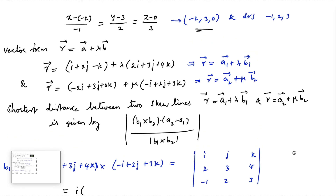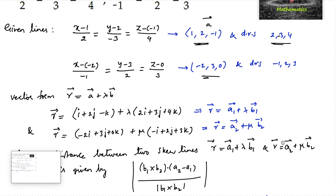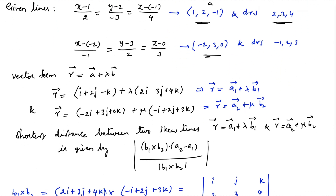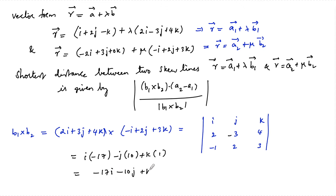Note: the direction ratio of the first line is (2, −3, 4) — the sign of the j-component is negative due to rewriting (2−y)/3 as (y−2)/(−3). The cross product gives: i(−9−8) − j(6+4) + k(4−3) = −17i − 10j + k.